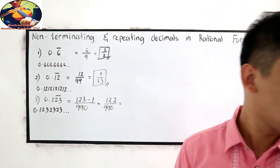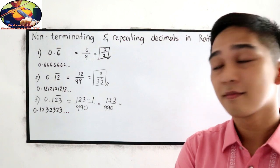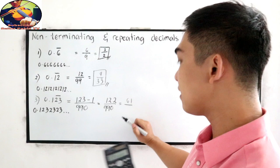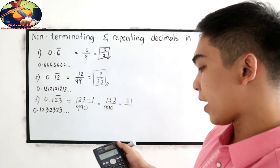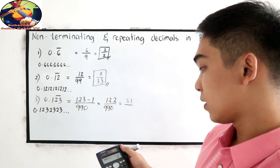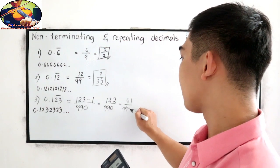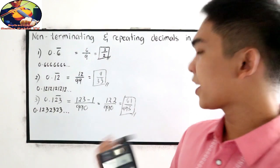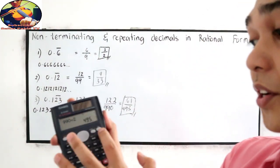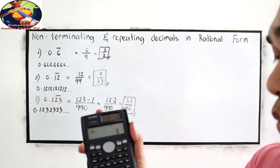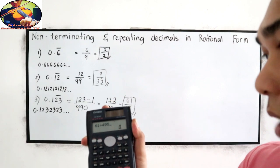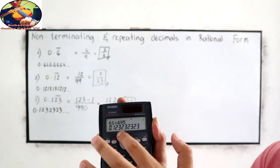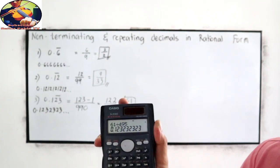122 over 990 is divisible by 2, giving us 61 over 495. Let us check using our calculator: 61 divided by 495 equals 0.12323232323232323. Correct!